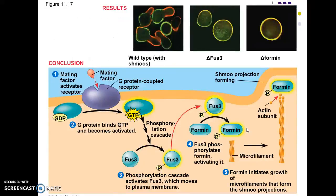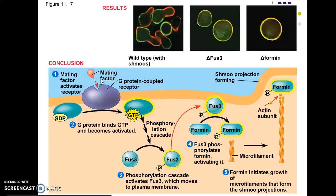This next figure is also from your textbook. This is an inquiry study where a yeast cell binds a mating factor — your mating factor is your ligand, from a yeast cell of the opposite mating type. They found that this caused a signal transduction pathway that then caused the formation of a SHMOO — S-H-M-O-O — which is a little odd projection out of the cell.